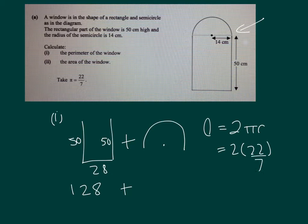7 goes into 14 twice, so we end up with 88. 2 × 2 is 4, 4 × 22 is 88. Now that's the circumference of a full circle.